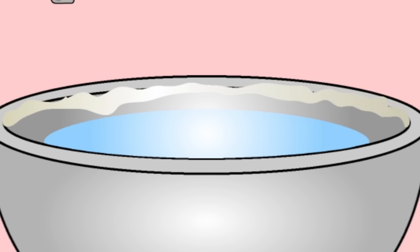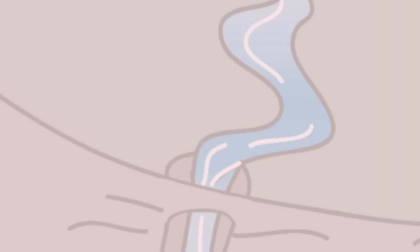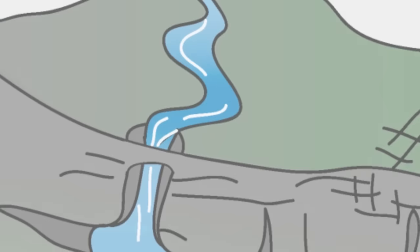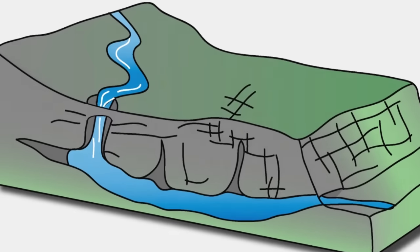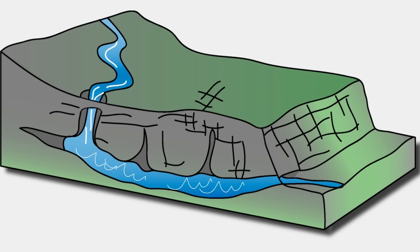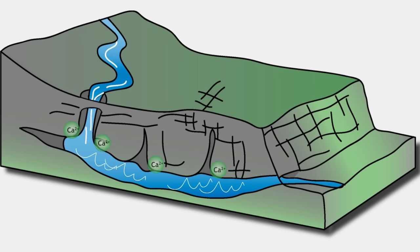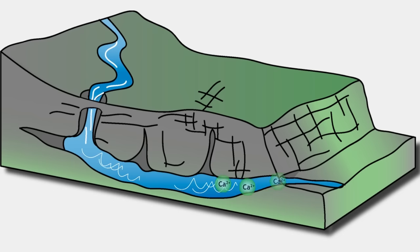Hardness is usually caused by the presence of calcium ions dissolved in the water. Water coming from rivers or wells has had to flow through the surrounding rocks, and if they contain soluble calcium salts, the water will become hard.